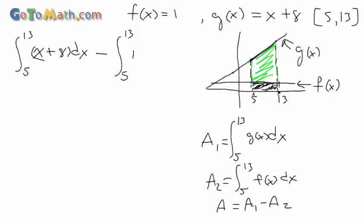What am I doing here? Okay, 1 dx. So that's going to be area 1 minus area 2. Now, since our lower and upper bounds are the same for both integrals, even though our functions are different, we can combine this into one single integral. That's going to be x + 8 - 1 dx. Let's simplify this down. Going from 5 to 13, 8 - 1 is 7, so we have x + 7 dx.